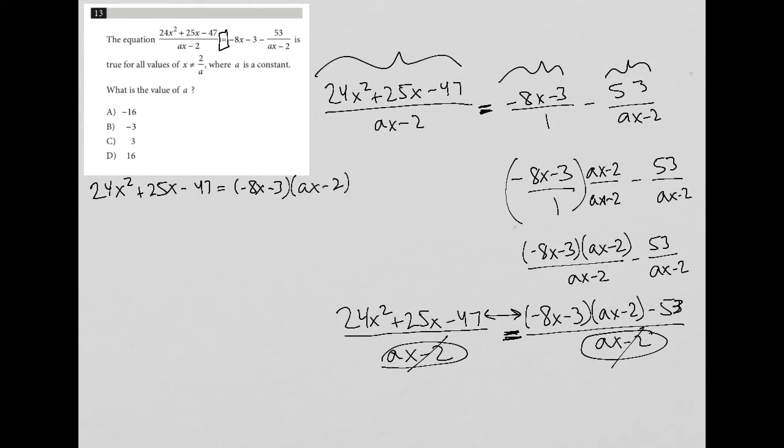I need to simplify the right-hand side, so I'm going to do FOIL here. Multiply first times first, I get negative 8ax squared, and then multiply the two outers, I get positive 16x. Multiply the two inner terms, I get negative 3ax. And multiply the two last terms, I get positive 6.